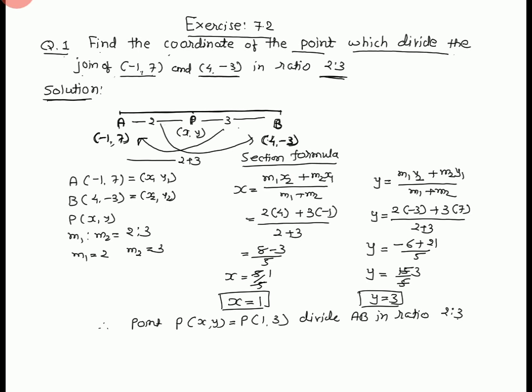Suppose point P is (x, y). This is 2 and this is 3. A(-1, 7) means x1, y1. B(4, -3) means x2, y2. P(x, y). m1 ratio m2 equals 2 ratio 3. m1 equals 2, m2 equals 3. We know the section formula.